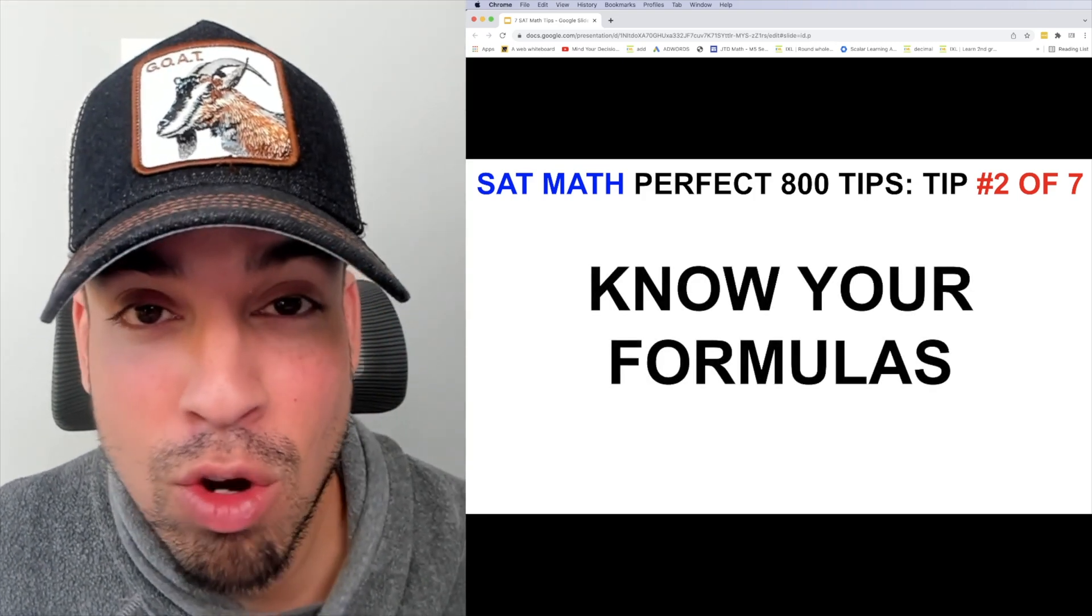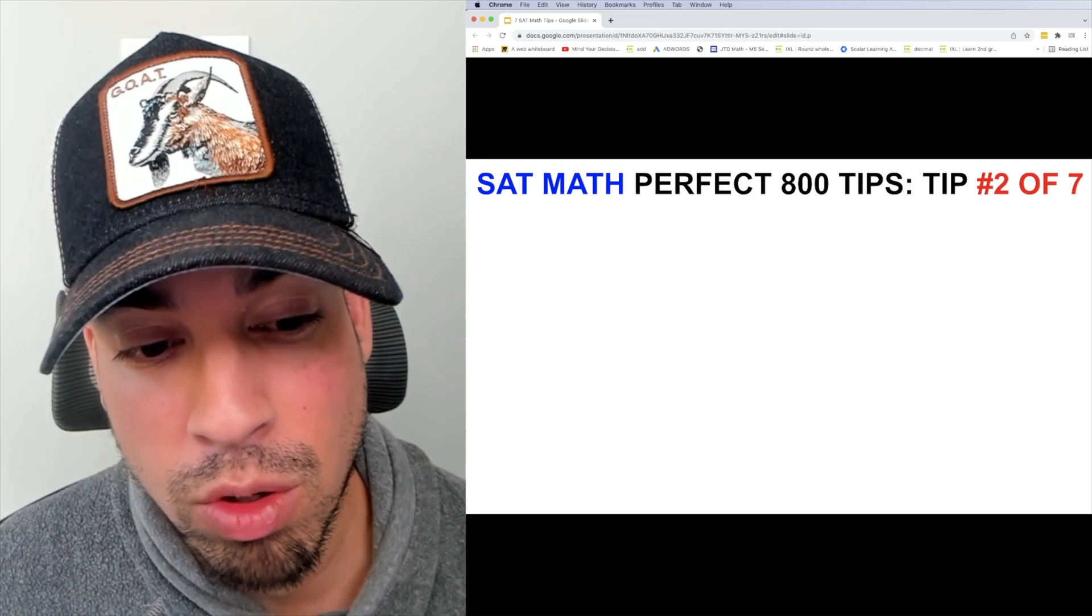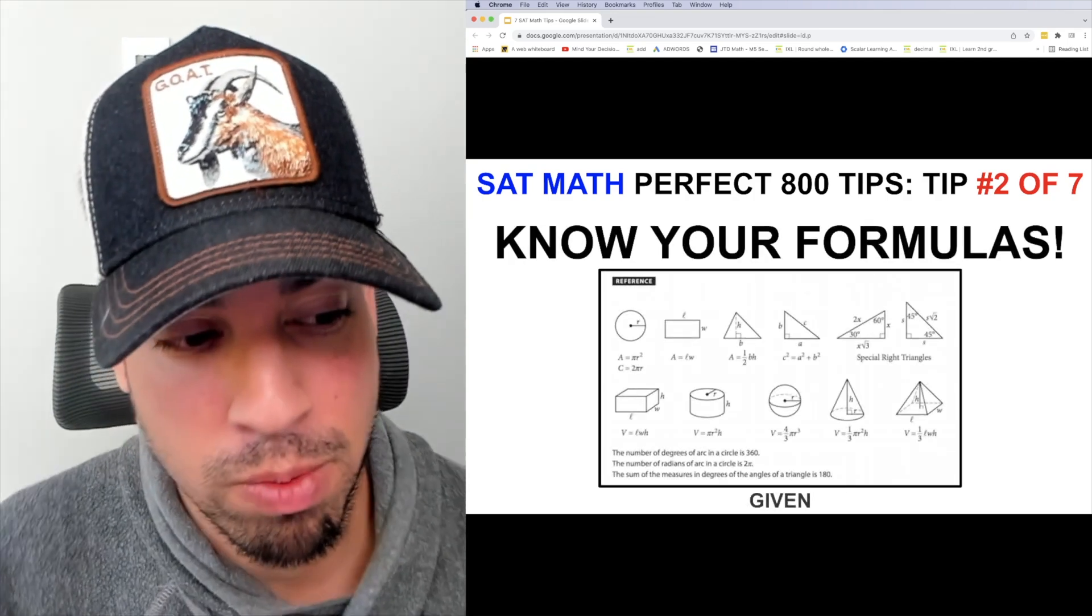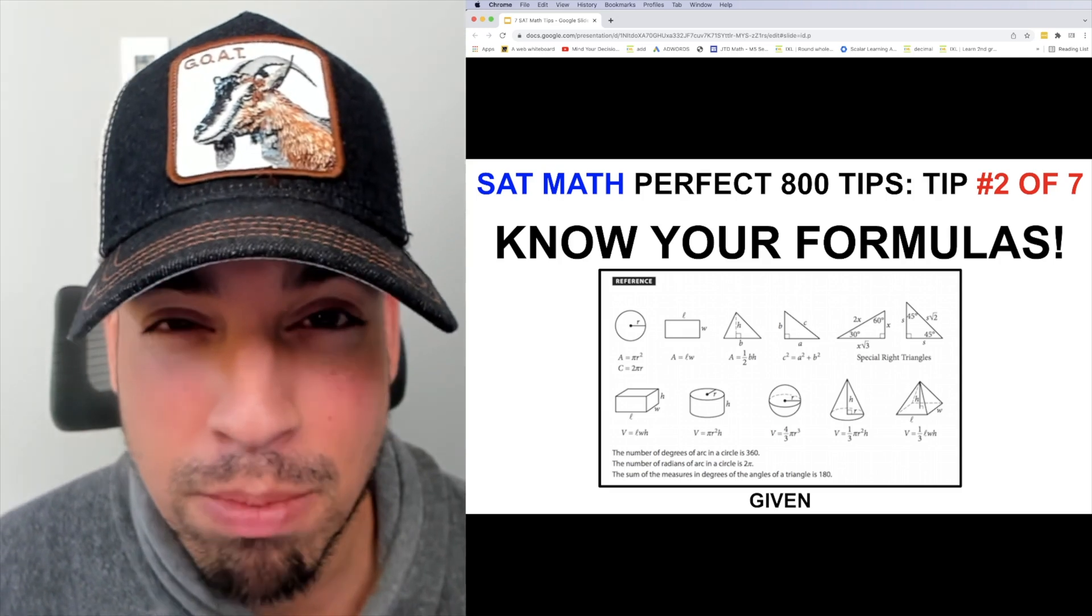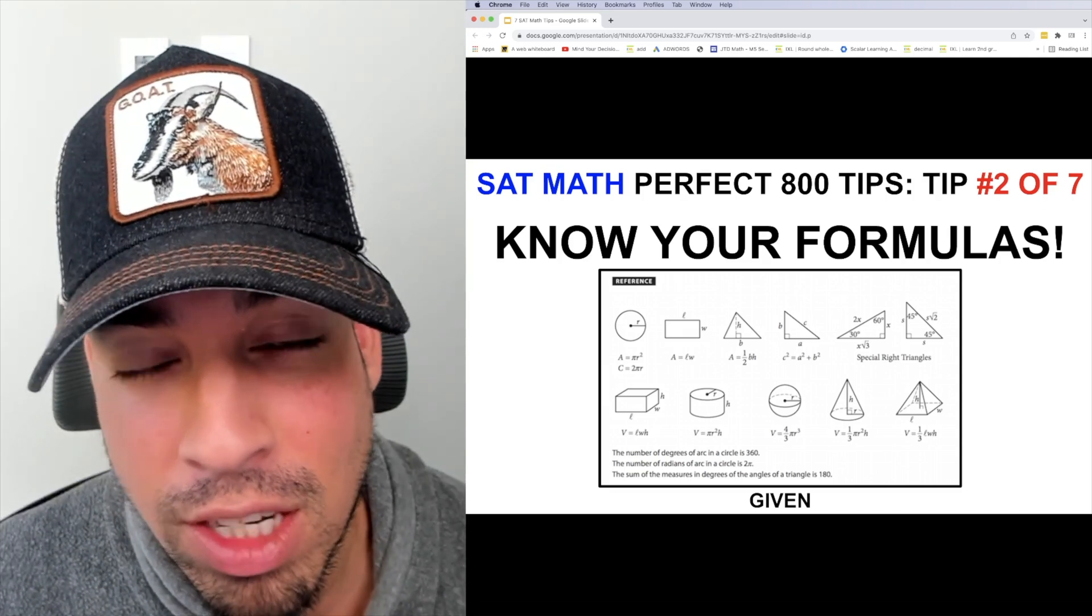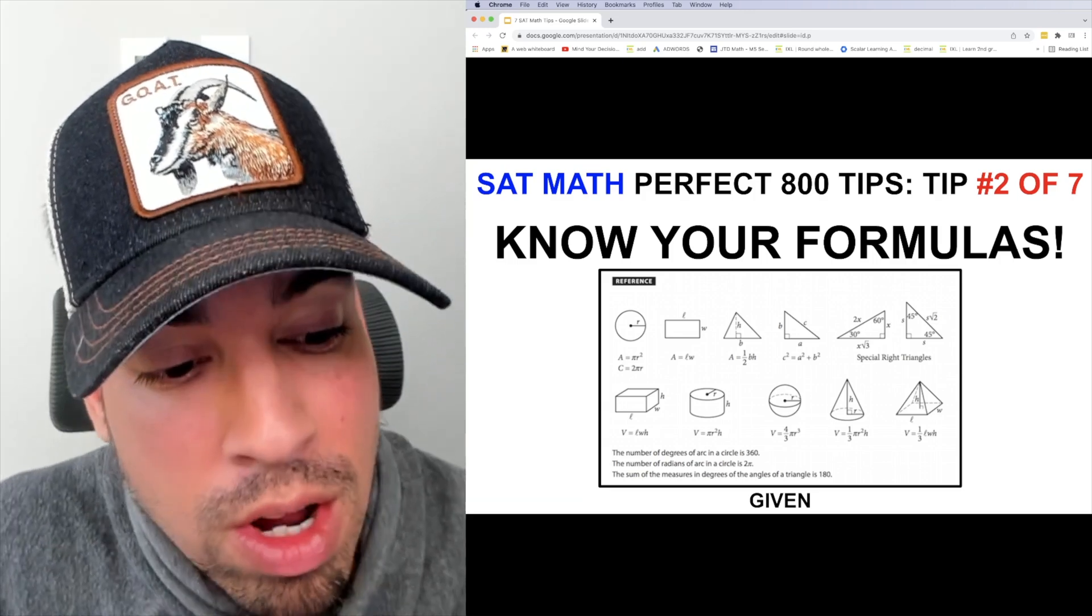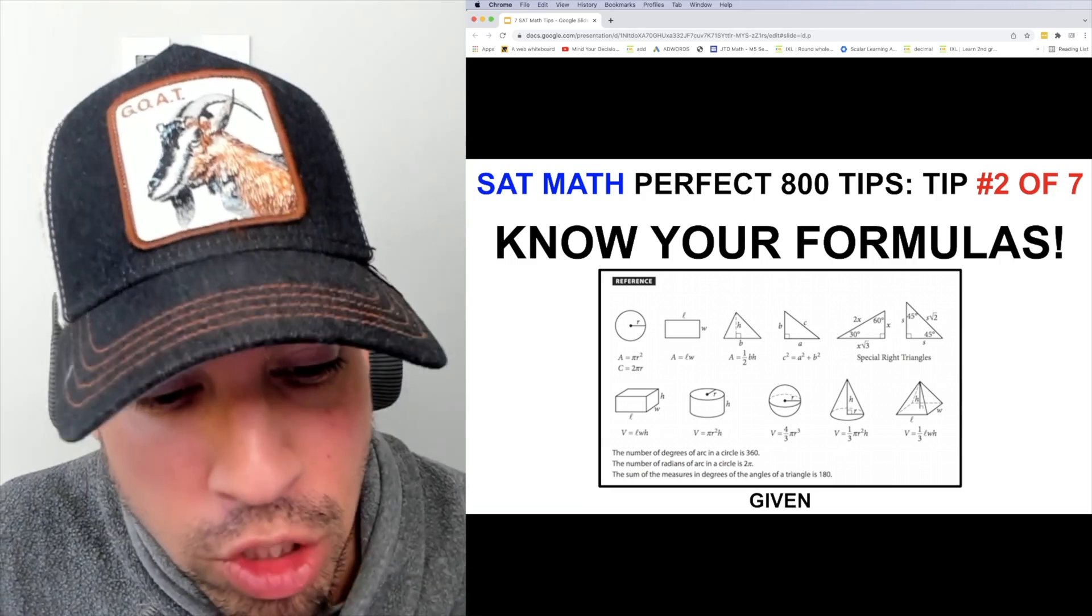Now the formulas that you need to know go in two different categories. The first category are the given formulas. This is the reference sheet - it's given on both the non-calculator and the calculator section. You actually don't need to commit these to memory. These are a lot of geometric formulas, special right triangles.